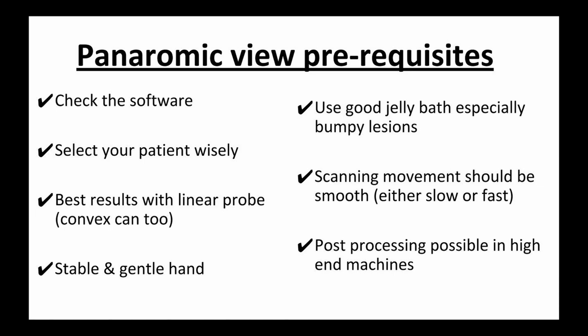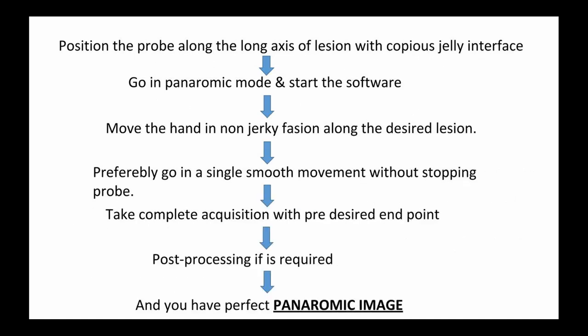Post-processing is possible in high-end machines. To obtain a panoramic image: position the probe along the long axis of the lesion with copious jelly interface, go into panoramic mode and start the software, move your hand in a non-jerky fashion along the desired lesion, preferably in a single smooth movement without stopping the probe, and take a complete acquisition with a pre-desired endpoint.